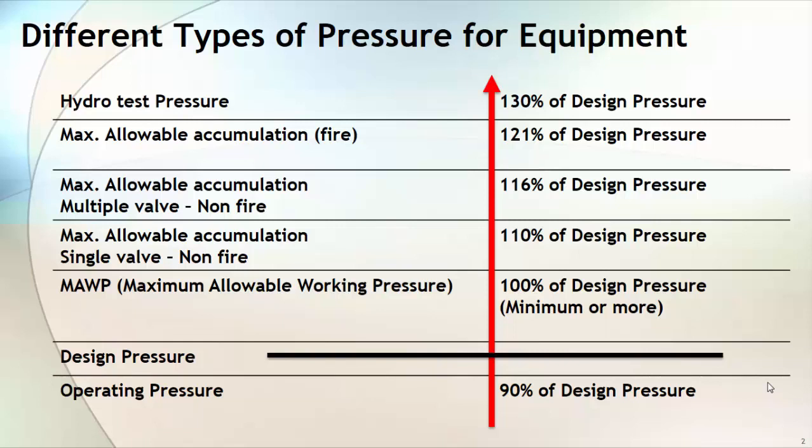Now with the help of this operating pressure, the equipment designer will add some safety margin, usually in the range of 10 to 25% depending on the experience of the designer. He will consider some unusual events that may occur during normal operation and based on this he will come up with a design pressure number.